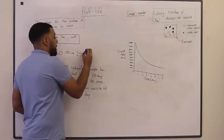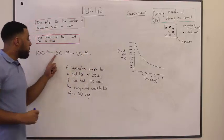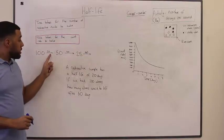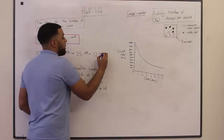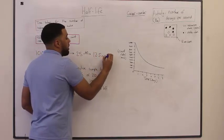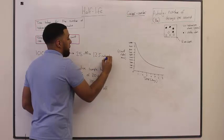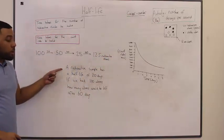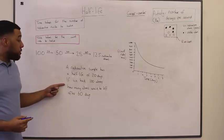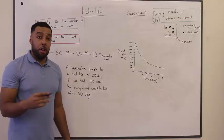And after sixty days, after one more half-life, we would be left with twelve point five radioactive atoms. And that's how we can work out how many atoms are remaining after a given half-life.